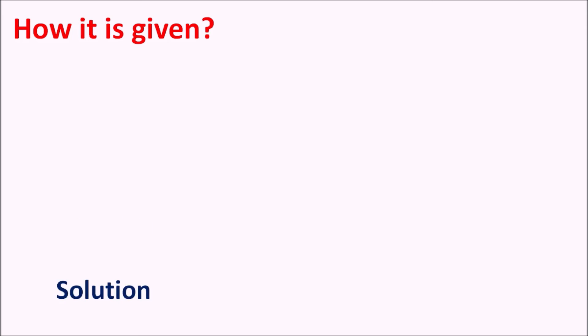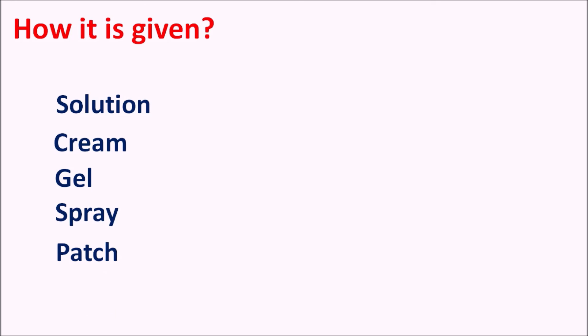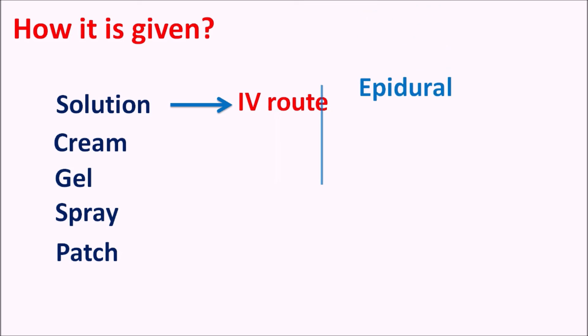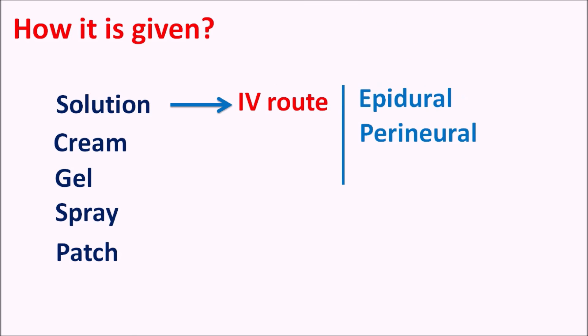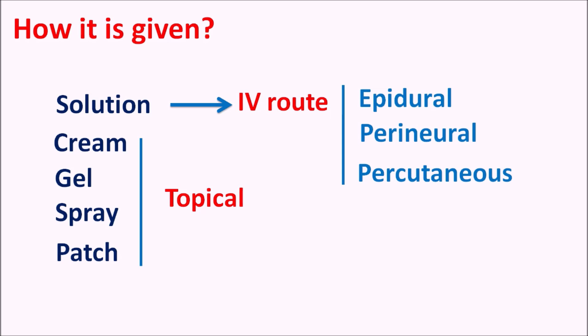How is it given? Lidocaine is available in different dosage forms: solution, cream, gel, spray, and patches. It is also available as a powder, and in many formulations it is combined with other drugs such as epinephrine. It is also combined with drugs such as metronidazole to produce anesthesia in the oral cavity. As a solution this drug is given by IV route to produce epidural anesthesia, perineural anesthesia, and percutaneous anesthesia. In other dosage forms it is given by topical route to produce local anesthesia. So lidocaine can produce either local or regional anesthesia whether given by IV route or applied topically.